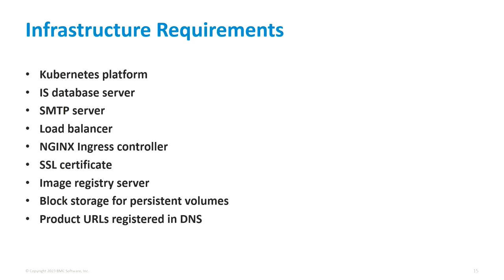Before you can begin an install, these are the key infrastructure components required. You need a Kubernetes platform — native Kubernetes, OpenShift, or one of the cloud Kubernetes providers. You need a database server — SQL, Oracle, or Postgres — external to the cluster, to which your IS database can be restored. You need an SMTP server for mail, since many products can send email messages, and during installation one or more email messages are generated containing information about the Helix platform tenant that you'll need to receive.